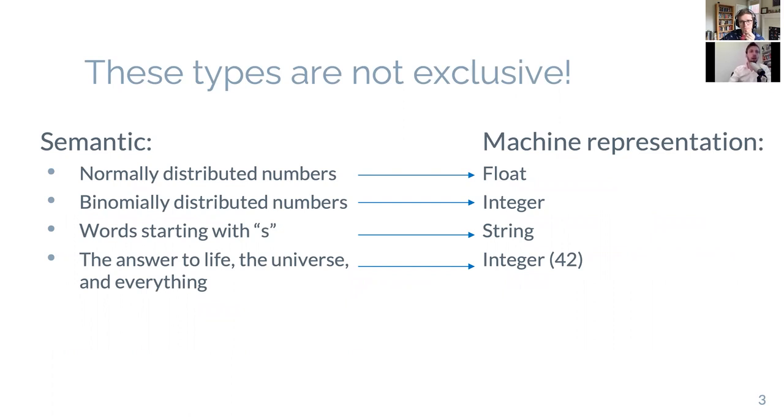So these types are not exclusive. For example, if you have normally distributed numbers, the database will represent it as a float. For binomials as an integer, words starting with an S can be represented as strings. And the answer to life, the universe and everything can be stored in an integer. So these are not exclusive, they may work together. And we invest a lot of effort about optimizing this machine representation, but the semantic representation will actually help us make better programs.